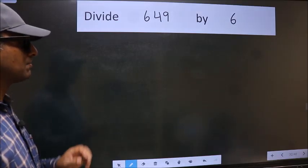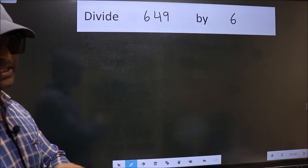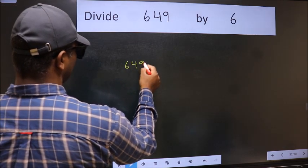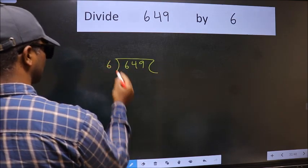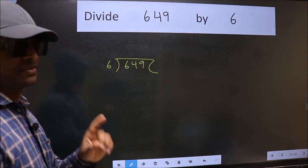Divide 649 by 6. To do this division, we should frame it in this way: 649 here and 6 here. This is your step 1.